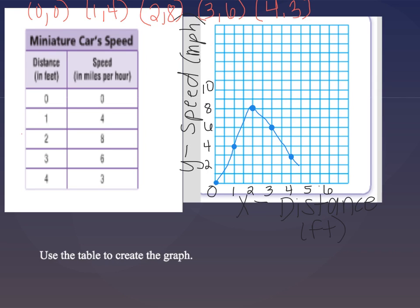Alright, so I've gone ahead here, I've made all of my ordered pairs: 0, 0, 1, 4, 2, 8, 3, 12, and 4, 16. I have labeled my graph, the x-axis and the y-axis. I decided to make the x-axis the distance that the miniature car traveled in feet, and then I made the y-axis the speed in miles per hour.